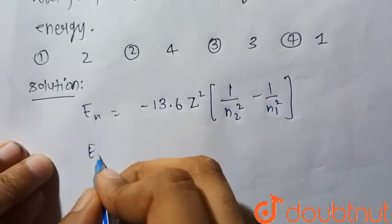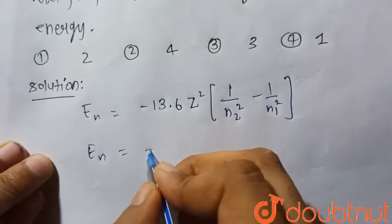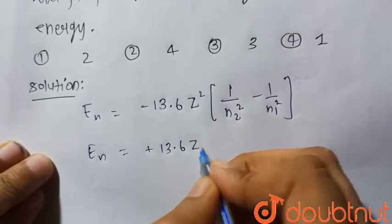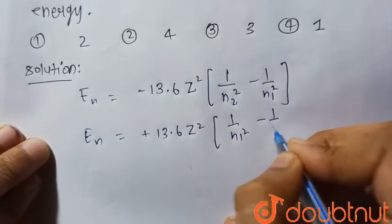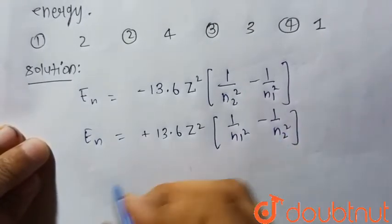Or it can be written as En is equal to plus 13.6 Z square, 1 by N1 square minus 1 upon N2 square. For hydrogen atom Z is equal to 1, this is in electron volts.